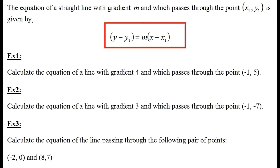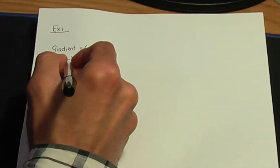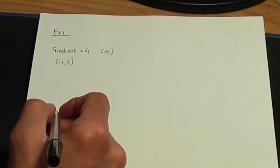Example number 1: calculate the equation of a line with gradient 4 which passes through the point (−1, 5). This is the passing point for the line, and we call that x1 and y1. So in this question, m is 4, and x1 = −1, y1 = 5.